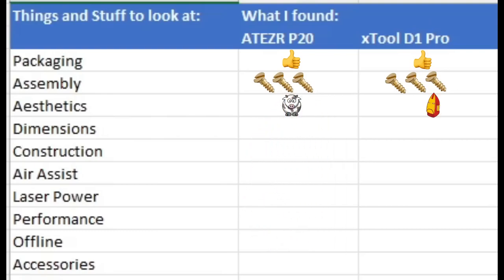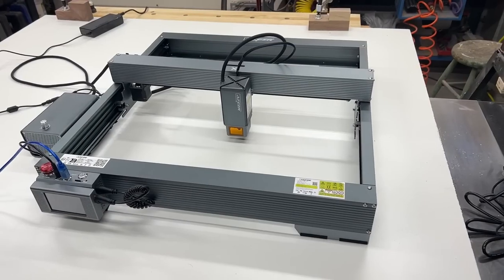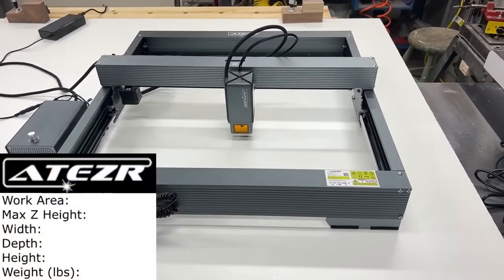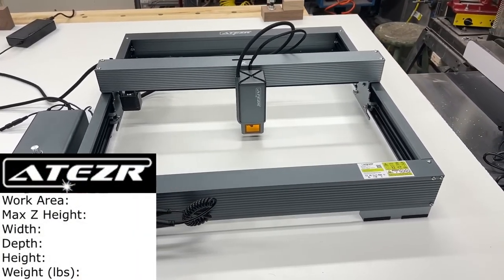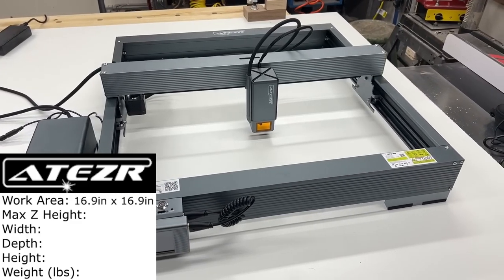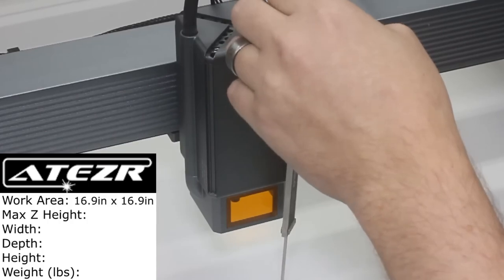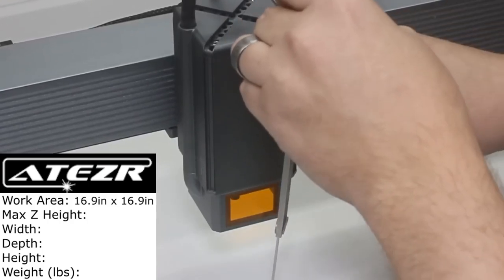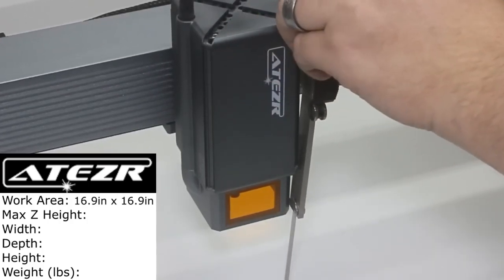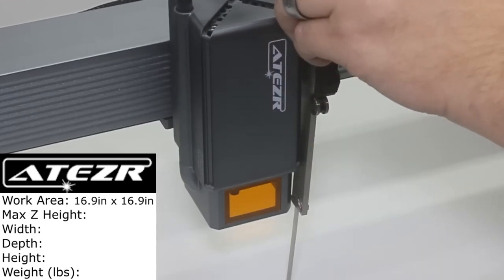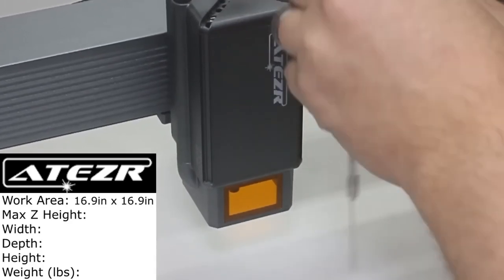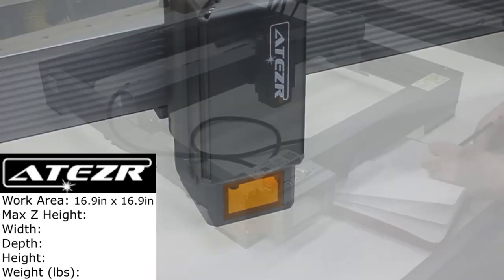Okay, dimensions. How big are these things? Well, for the Ateser, the working area is 16.9 by 16.9. That's 430 millimeters squared. To measure the max Z height without any risers, I adjusted the laser module to its highest setting, and then I just used my calipers to measure from the surface to the bottom of the laser shroud. And this gave me a reading of 2.9 inches.